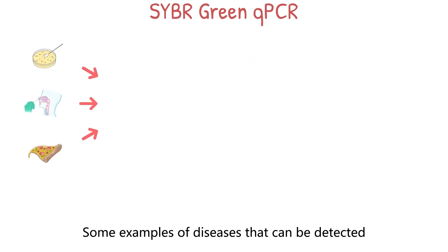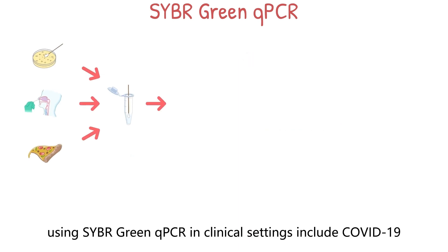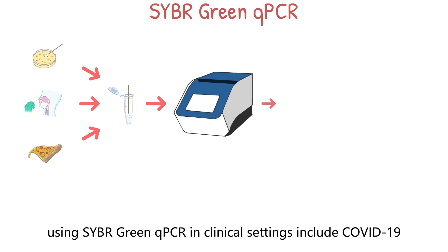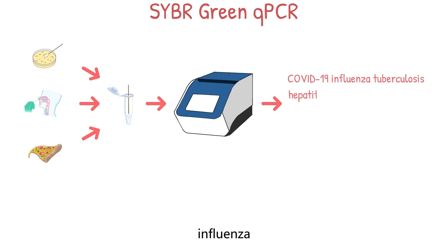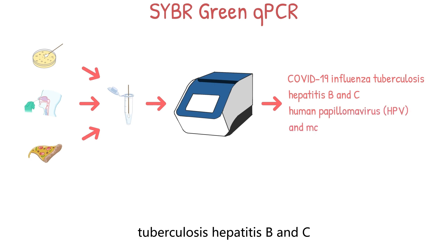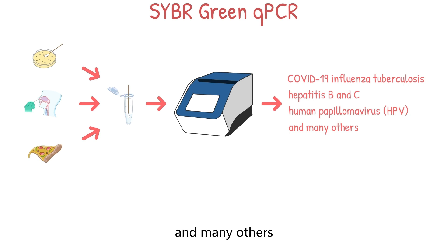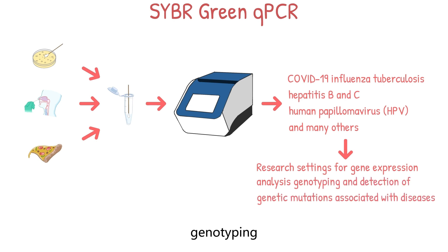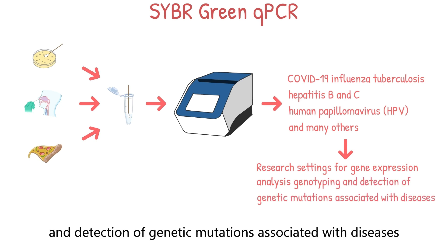Some examples of diseases that can be detected using CyberGreen QPCR in clinical settings include COVID-19, influenza, tuberculosis, hepatitis B and C, human papillomavirus or HPV, and many others. It's also used in research settings for gene expression analysis, genotyping, and detection of genetic mutations associated with diseases.